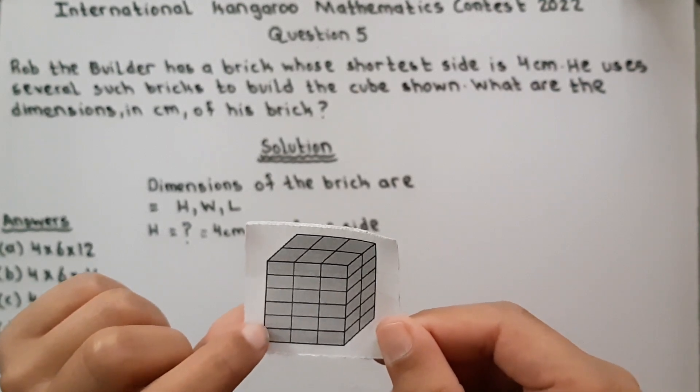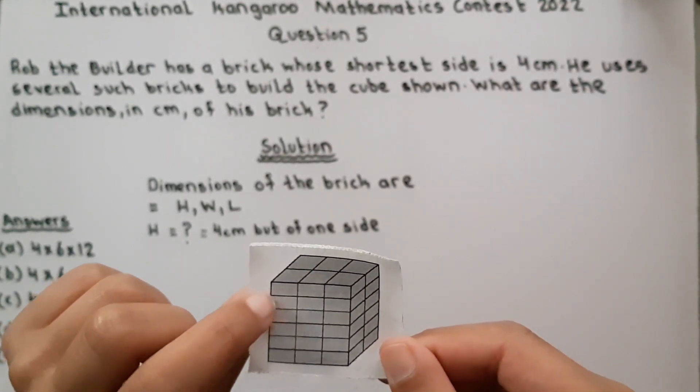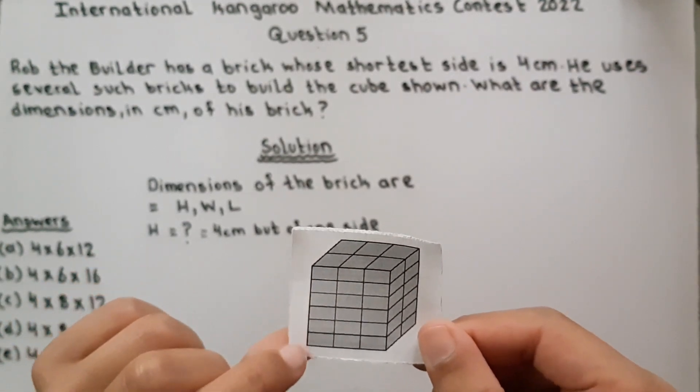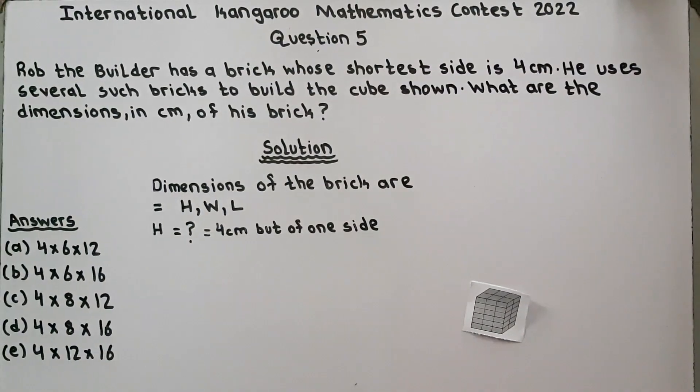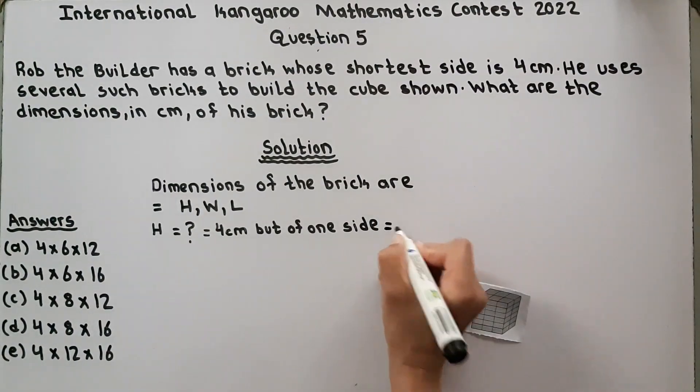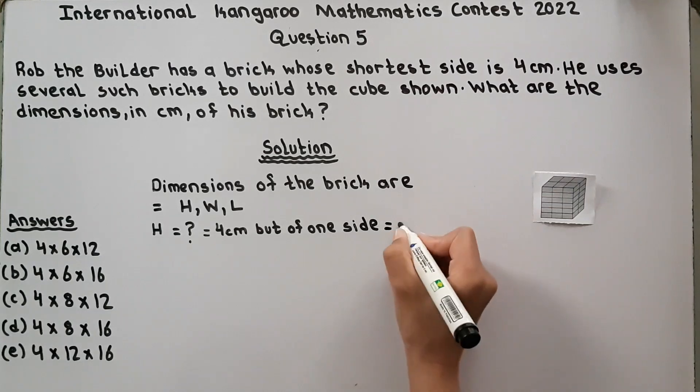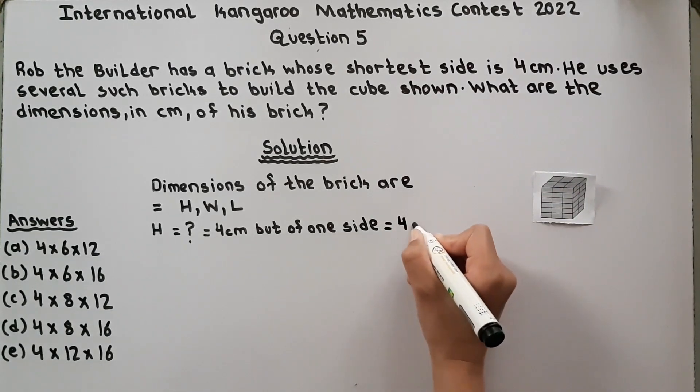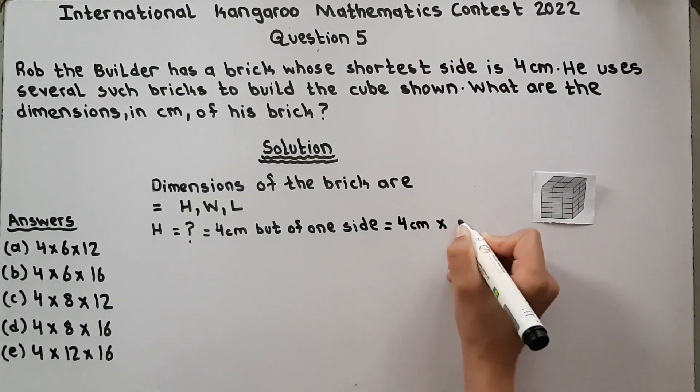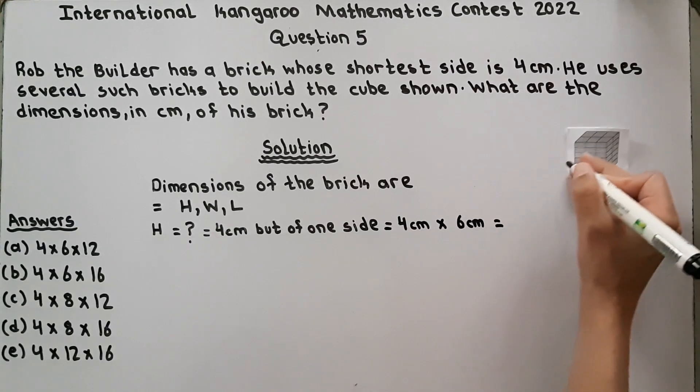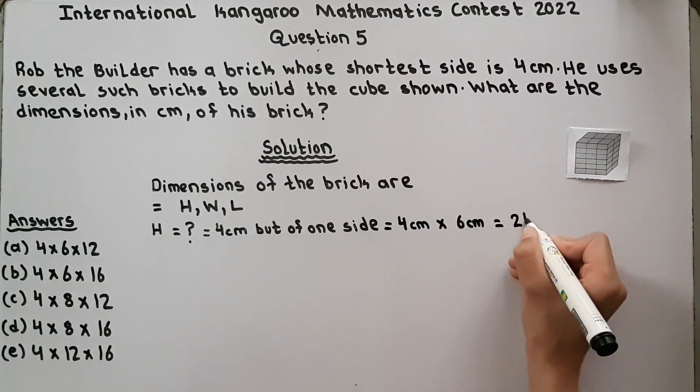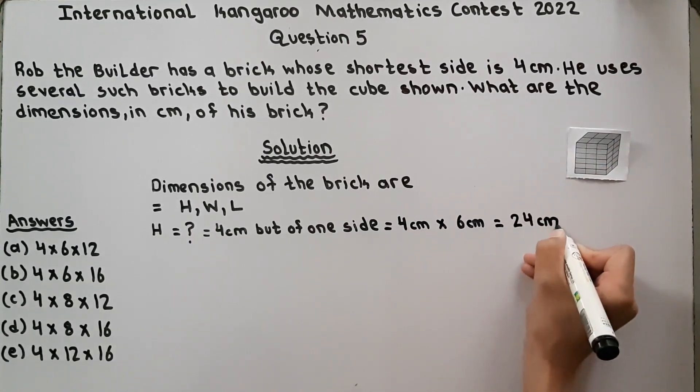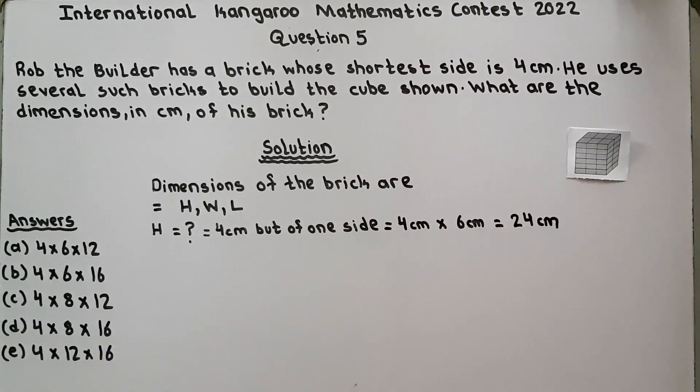These are 1, 2, 3, 4, 5, 6. These are 6 bricks he has used. So we will multiply it by 6. 4 cm times 6 equals 24 cm. So height is equal to 24 cm.